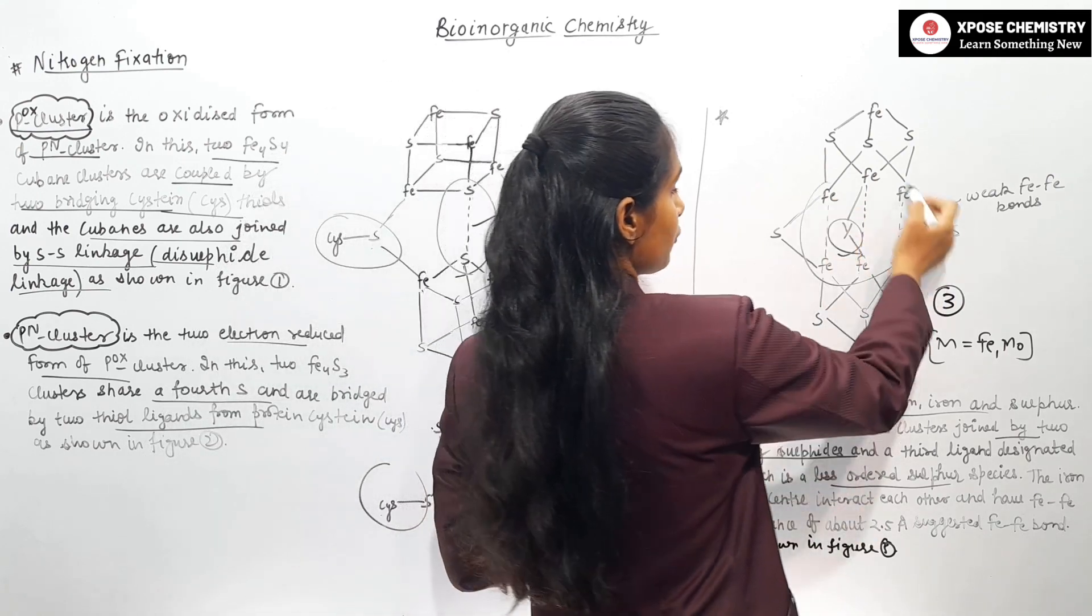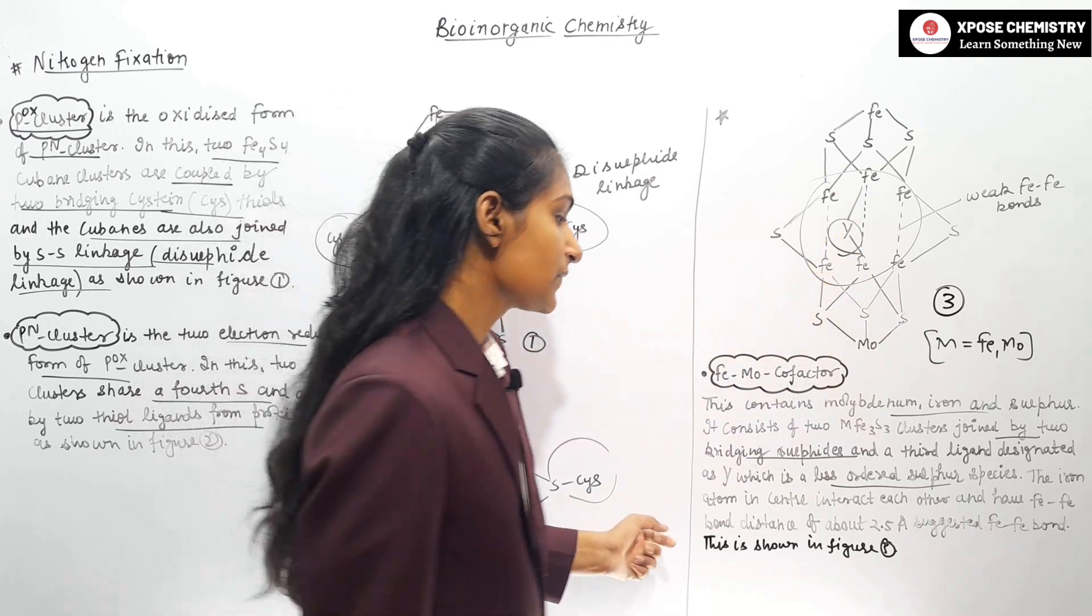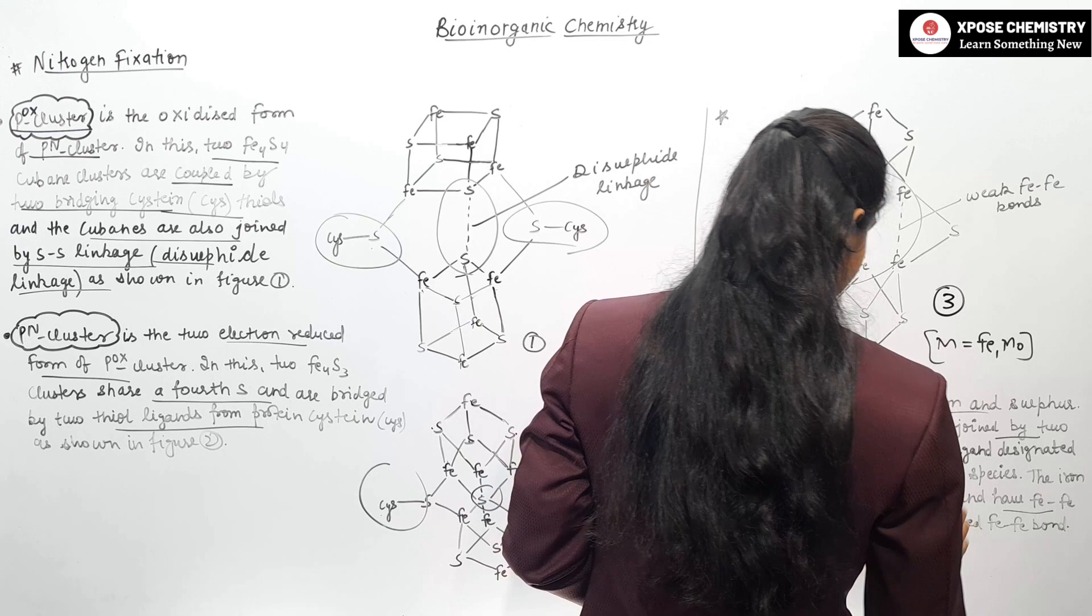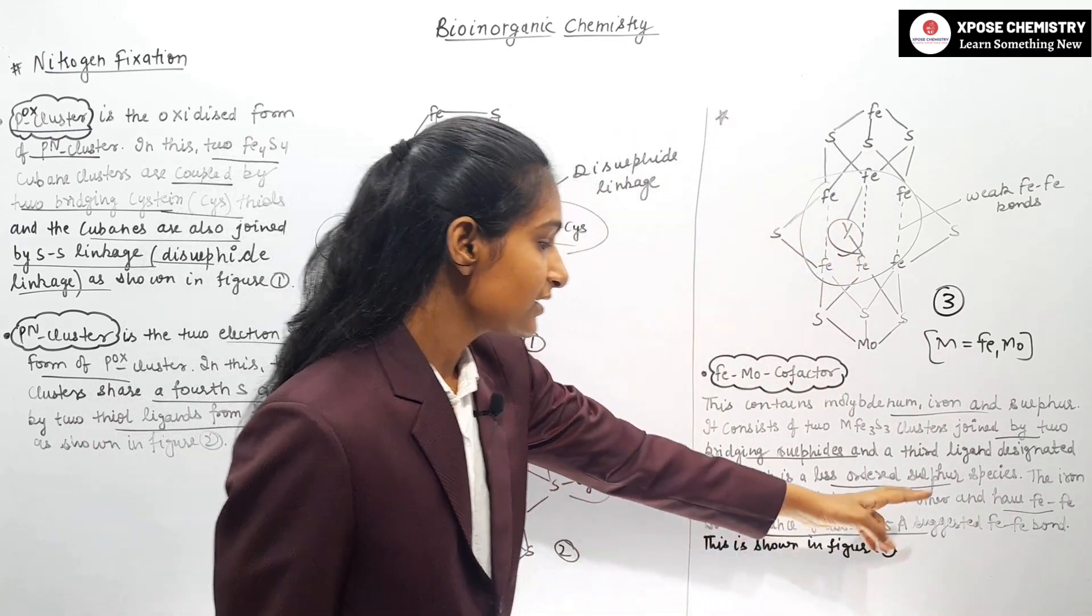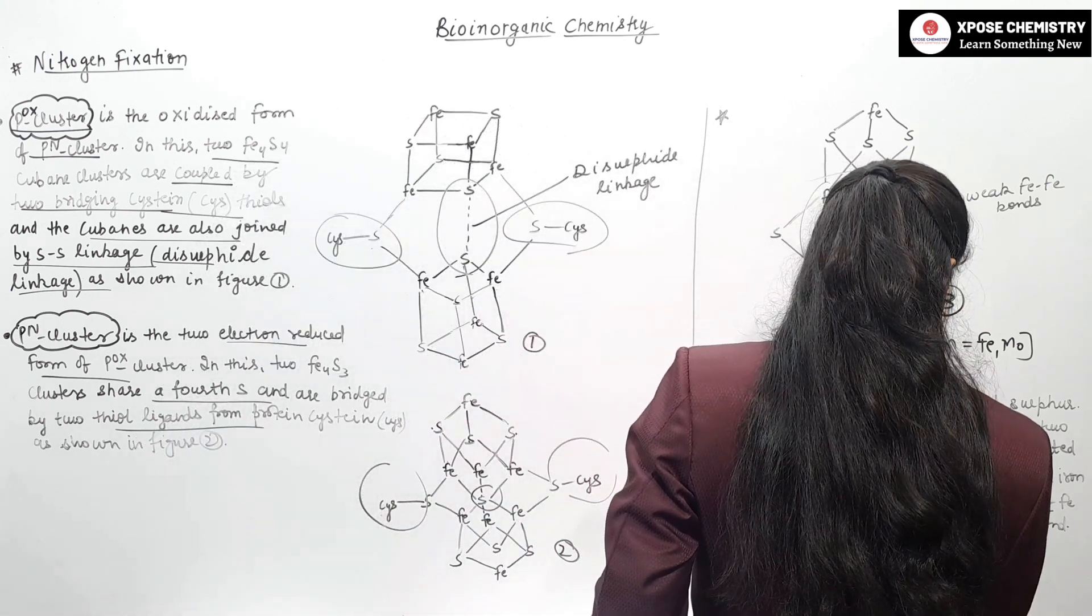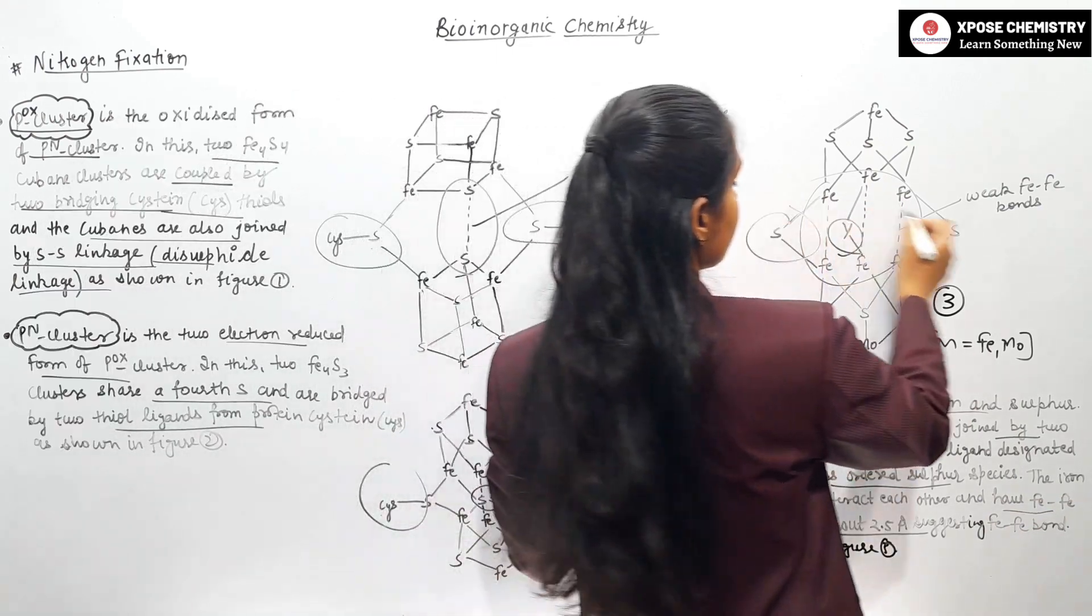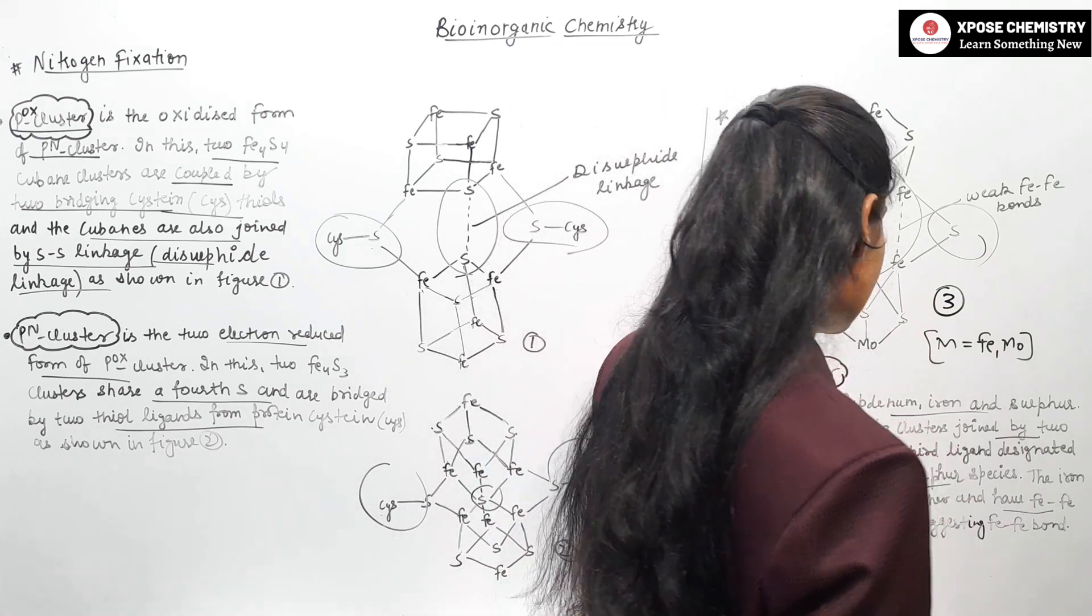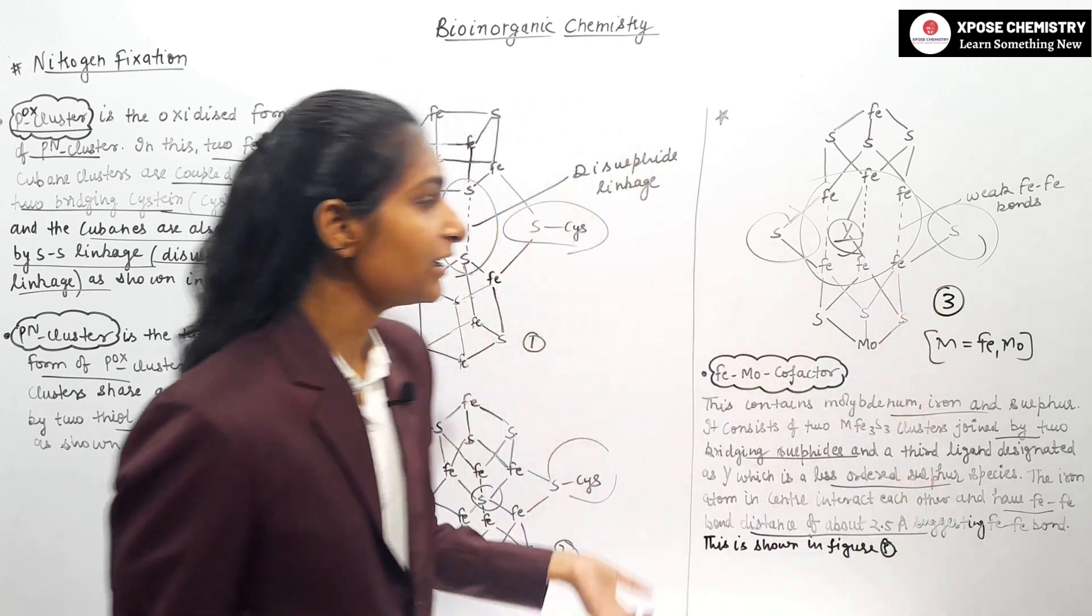The iron atoms are interacting with one another with weak Fe-Fe bonds. The Fe-Fe bond distance is about 2.5 angstrom, suggesting Fe-Fe bonds. This is shown in figure with two bridging sulfides, and the third ligand designated as Y.